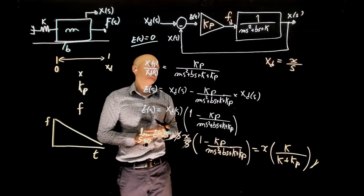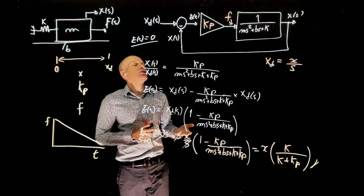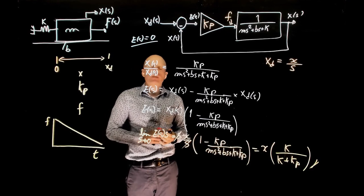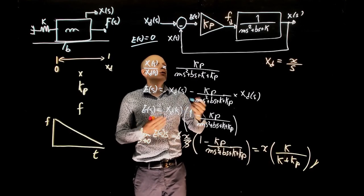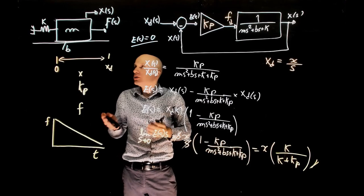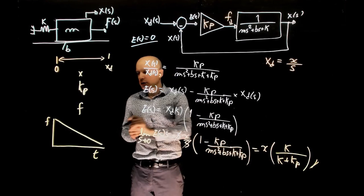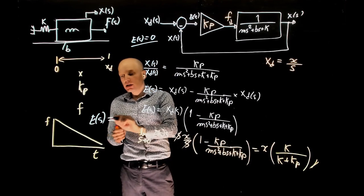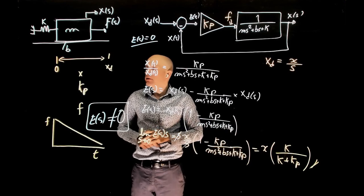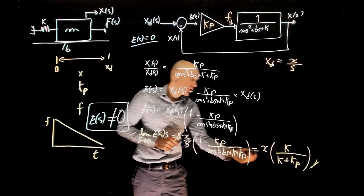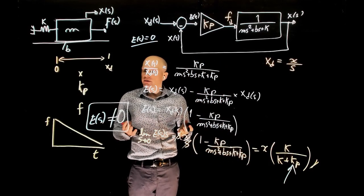The steady-state error can never be zero with a proportional controller and a spring. In order for a force to be applied, the error must be different from zero. The steady-state error can be minimized but never eliminated. The greater k_p, the smaller the steady-state error, but it will never reach zero.